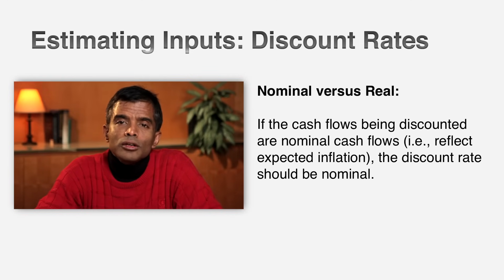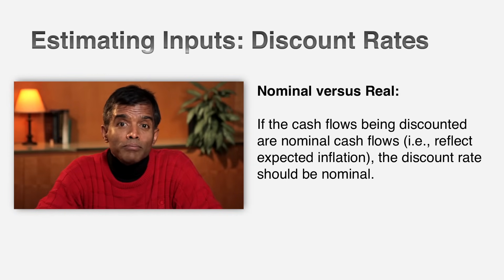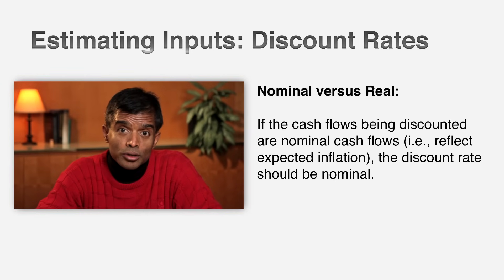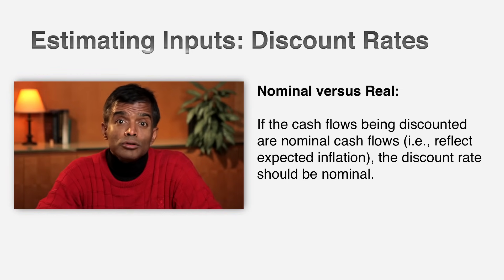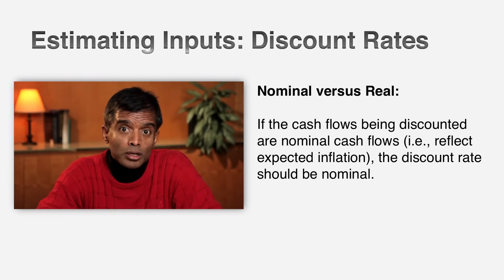When you do valuation, you can do it either in nominal terms or real terms. When you do things in real terms, you basically ignore inflation — you forecast out the number of units you will sell and act like the price is not going to go up even if there's inflation. Those are real cash flows, and if your cash flows are real, your discount rate has to be a real discount rate. If your cash flows are nominal, you have a second choice: what currency are you going to do the cash flows in? You can estimate the cash flows in dollars, pesos, or euros. You can value any company in any currency, and once you pick the currency, your discount rate has to be in exactly the same currency.